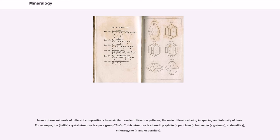For example, the halite crystal structure is space group Fm3m. This structure is shared by sylvite, periclase, bunsenite, galena, alabandite, chlorargyrite, and osborneite.